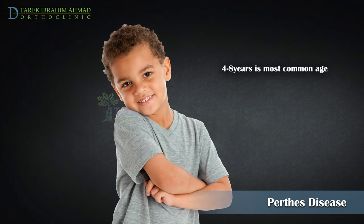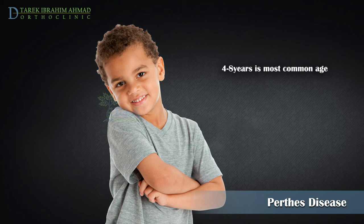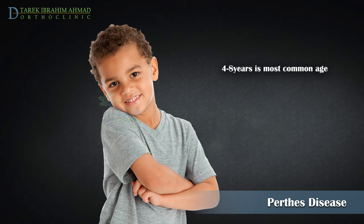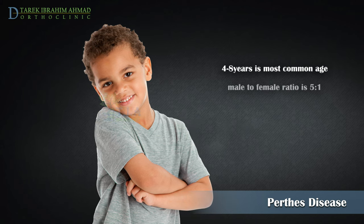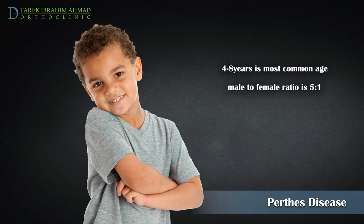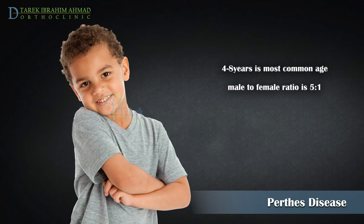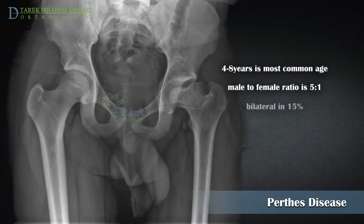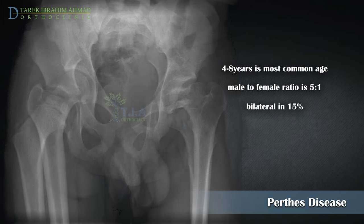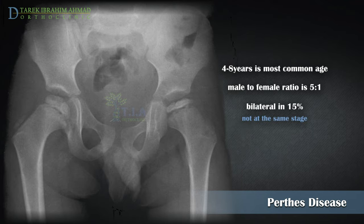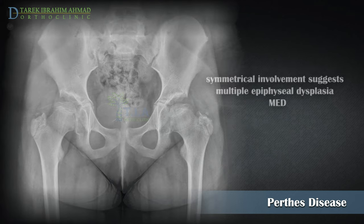Perthes' disease usually affects children between the ages of four and eight years, but the range can extend to between two and twelve years old. It is five times more common in boys than in girls, but when girls are affected the condition tends to be more severe. For the majority of children with Perthes' disease, only one hip is ever affected. Both hips are affected in up to fifteen percent of children, but usually not at the same time.